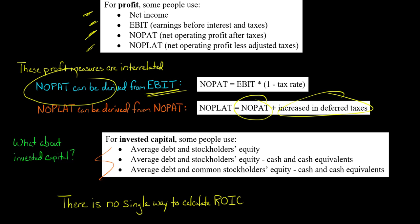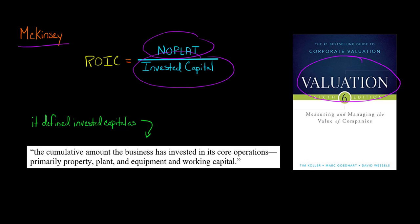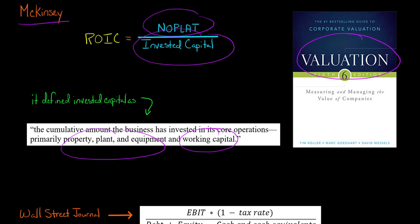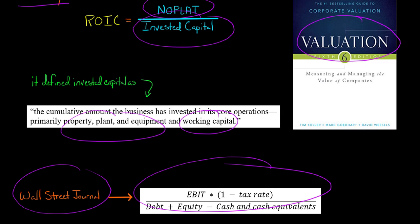There is no single way to calculate return on invested capital, so let me show you several different examples. Starting with the consulting firm McKinsey: in their book on valuation, McKinsey calculated return on invested capital as NOPLAT divided by invested capital, where invested capital was basically the sum of the company's property, plant and equipment and its working capital.